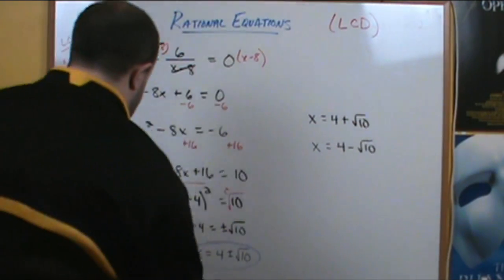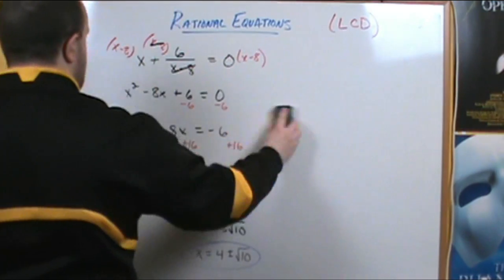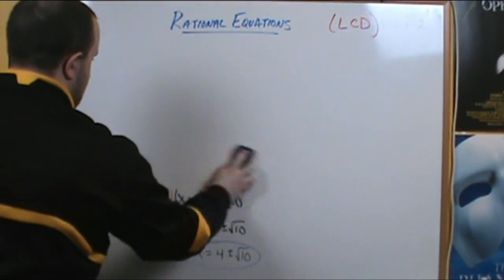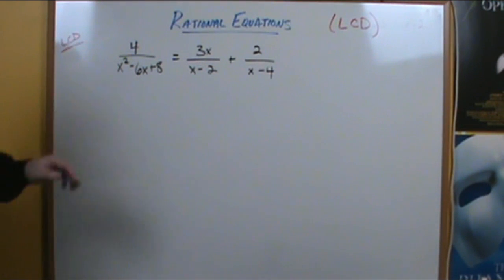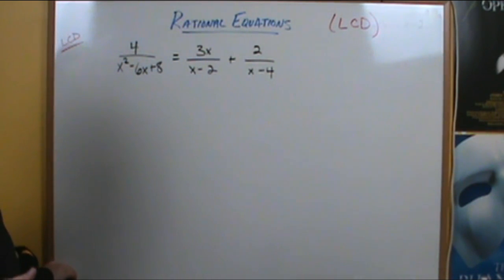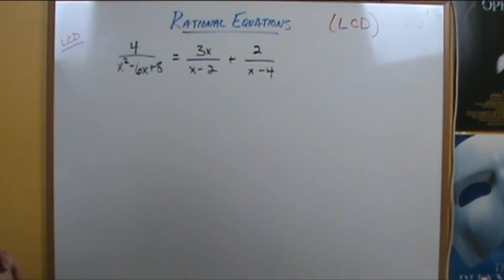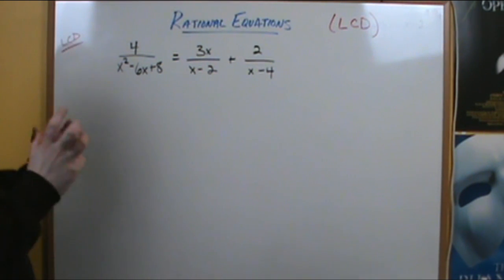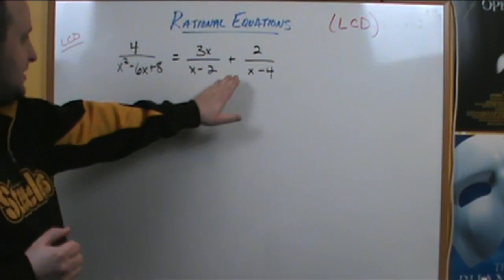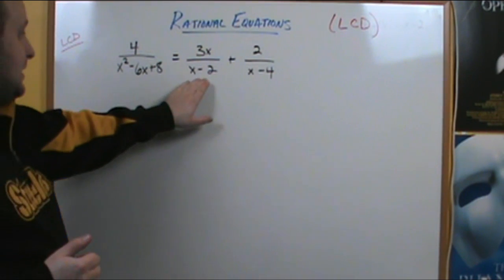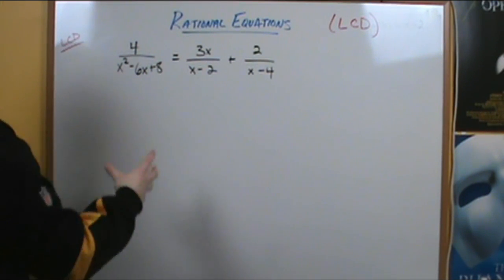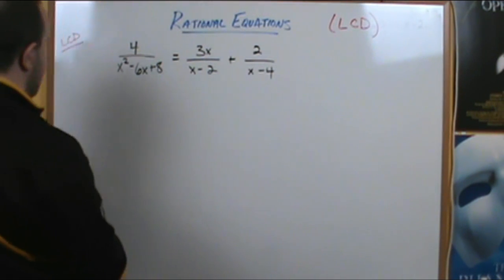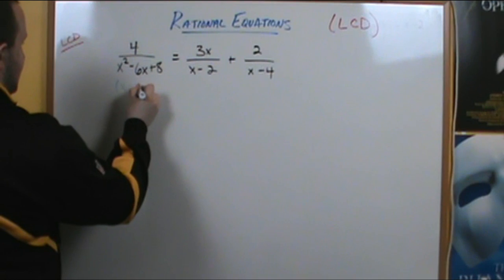Let's move on to a second, more complicated example. We have 4 divided by x squared minus 6x plus 8 equals 3x divided by x minus 2, plus 2 divided by x minus 4. Again, the key here is the least common denominator. In our denominators, we have x squared minus 6x plus 8, x minus 2, and x minus 4. The factorization of x squared minus 6x plus 8 is x minus 2 times x minus 4.